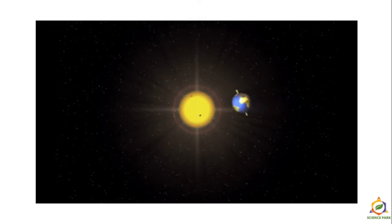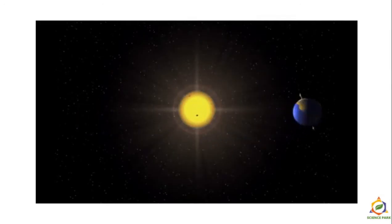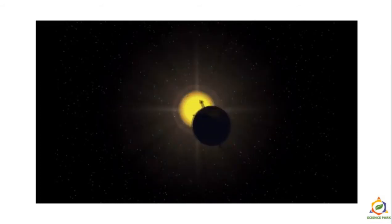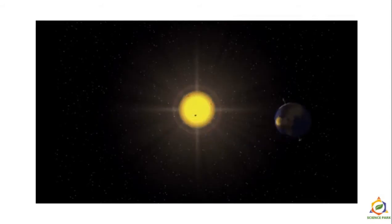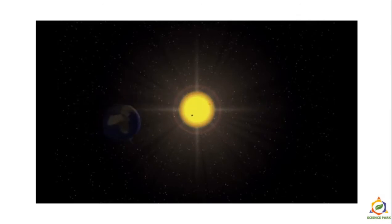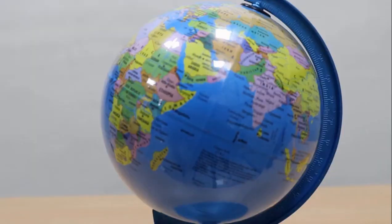Now we will understand the revolution of earth in detail. The axis is not always facing toward or away from the sun; it points in one specific direction such that at one point the axis faces toward the sun, and at the opposite end of the orbit it faces away from it. Earth also revolves around the sun in an anti-clockwise direction, and there are a few effects due to revolution as well.